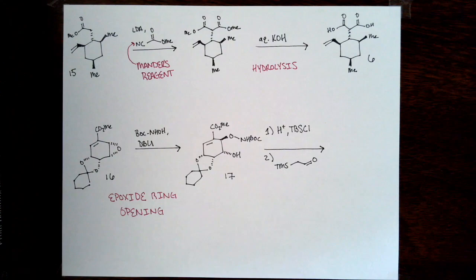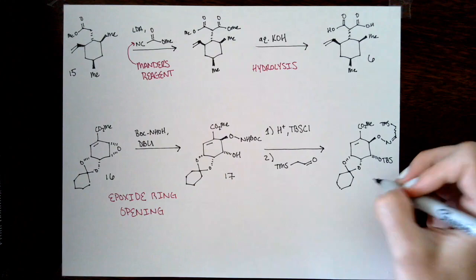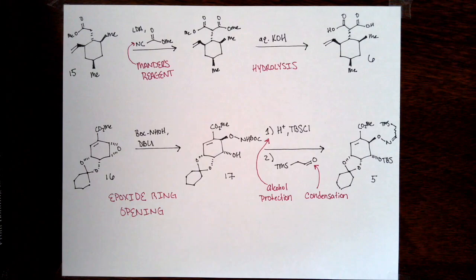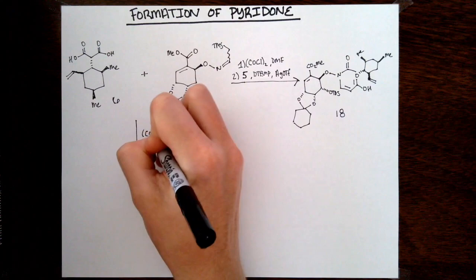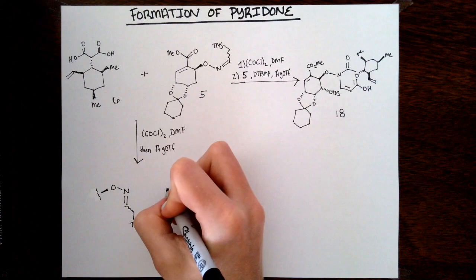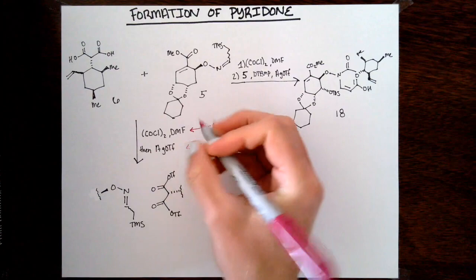After accessing known epoxide 16, they reacted the epoxide with N-Boc hydroxylamine through a simple nucleophilic attack to open the epoxide. They confirmed the regioselectivity of this epoxide opening by X-ray analysis. Once they had intermediate 17, a simple TBS protection and condensation reaction gives 5.